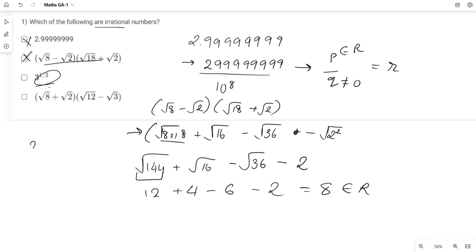Now, 3 raised to 1 by 3. We know that 3 is not a perfect cube. Hence, 3 raised to 1 by 3 is not equal to a rational number. Hence, 3 raised to 1 by 3 is an irrational number.